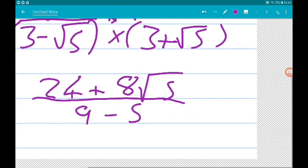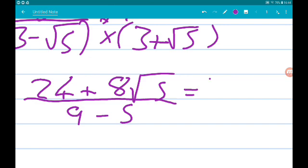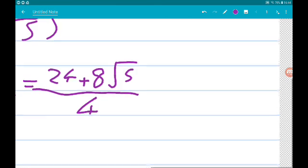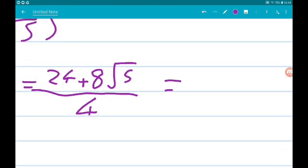So we get 24 add 8 root 5, all over 4, and that gives us 6 add 2 root 5.